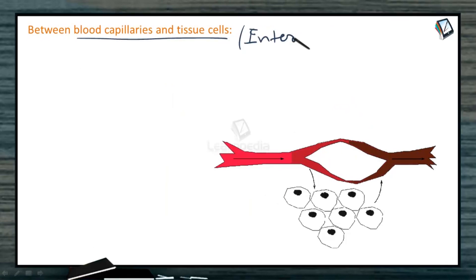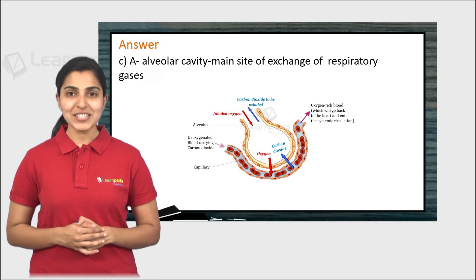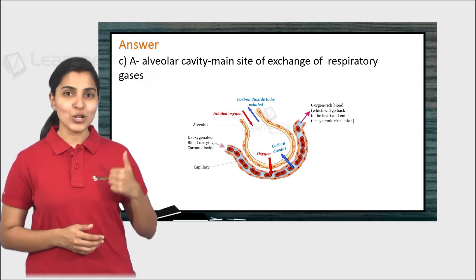In this next diagram we can see exchange between blood capillaries and tissue cells. We can call it internal respiration. The blood rushing towards tissue cells will release O2 to tissue cells because O2 in tissue cells is less and tissue cells will release CO2 to the blood and blood will take CO2 away. I hope you can now answer the question. You can take a look at the solution here.